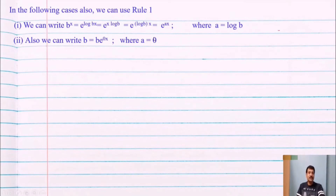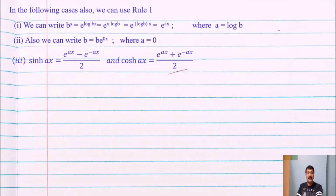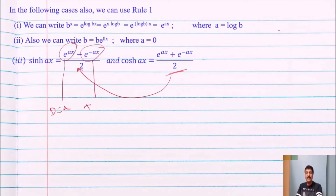One more case where rule number one applies directly: hyperbolic functions. By definition, sinh(x) = (e^x − e^(−x))/2 and cosh(x) = (e^x + e^(−x))/2. So for the e^x term, D is replaced by a, and for the e^(−x) term, D is replaced by minus a.